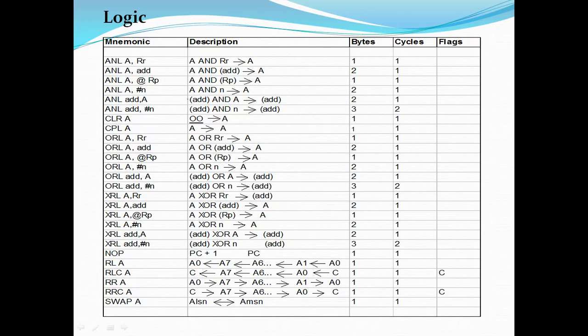For most of these logical operations, the destination is the accumulator. The CPU ALU reads all results and saves them in the accumulator. I will explain instructions one by one. The mnemonic ANL A, Rr performs AND logic between the accumulator and any general-purpose register.